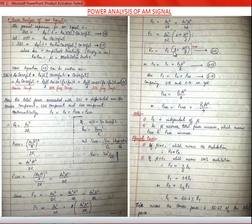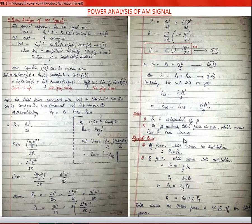So P_t = P_C·(1 + μ²/2). The total power equals carrier power plus sideband power (both USB and LSB). Sideband power = P_C·μ²/4. Note: P_C is independent of μ (modulation index). As μ increases, total power increases — meaning P_USB and P_LSB increase. Special cases: if μ = 0, P_t = P_C; if μ = 1, carrier power is 2/3 of P_t, or 66.6% of total power.